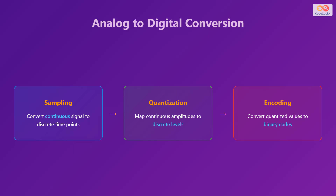To convert an analog signal into a digital format, a three-step process is followed. First, sampling converts the continuous signal into discrete time points. Next, quantization maps the continuous amplitudes to discrete levels. Finally, encoding converts the quantized values into binary codes, suitable for digital processing.